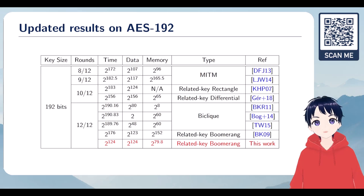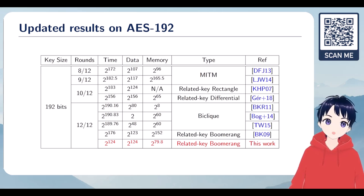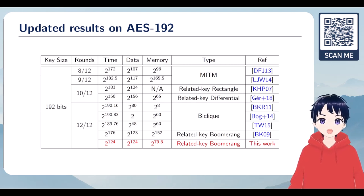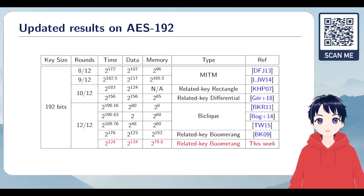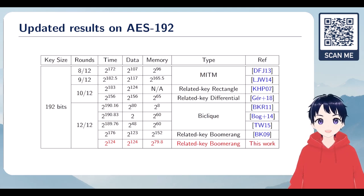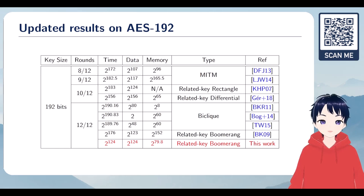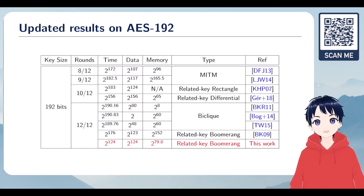In general, we found the current best related-key boomerang attack on AES-192 with 2 to the power of 124 time, 2 to the power of 124 data, and 2 to the power of 79.8 memory complexities, which is better than the one presented by Biryukov and Khovratovich at AsiaCrypt 2009 with complexities 2 to the power of 176, 2 to the power of 123, and 2 to the power of 152, respectively. This represents a huge improvement in the time and memory complexity, illustrating the power of automatic tools in cryptanalysis.